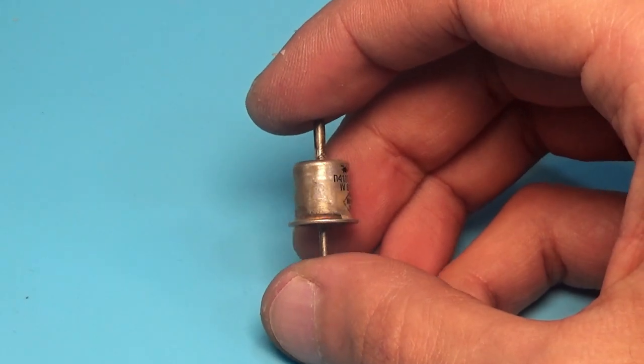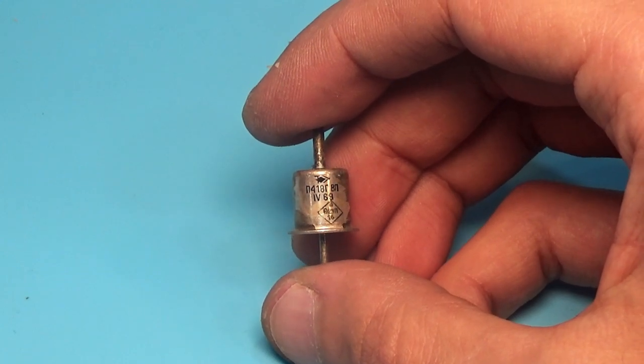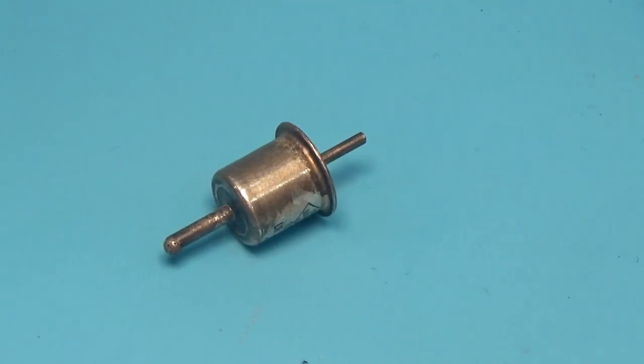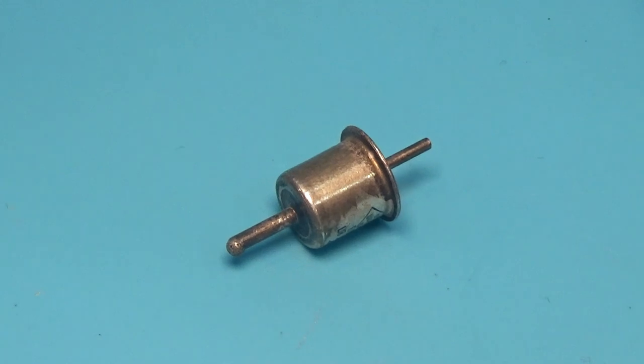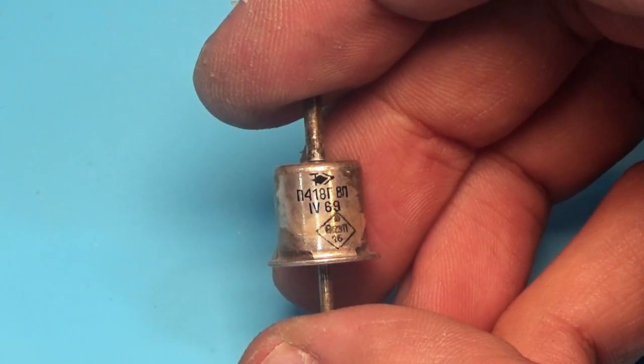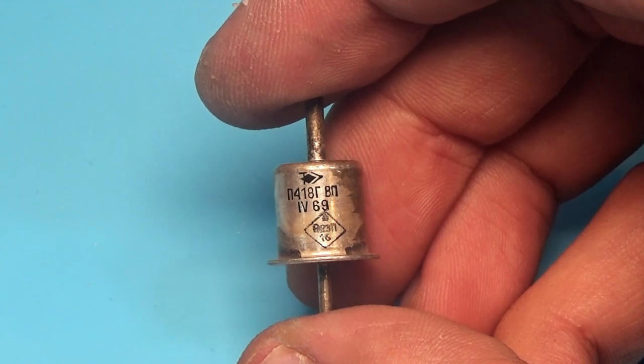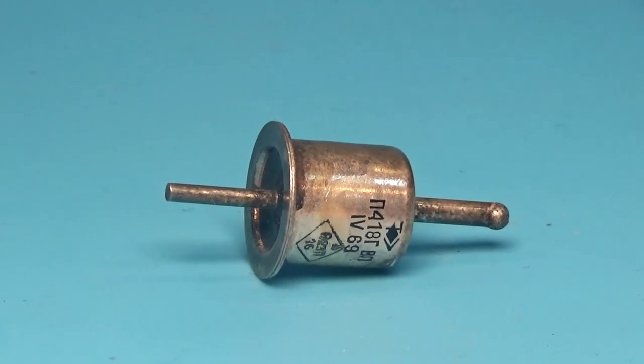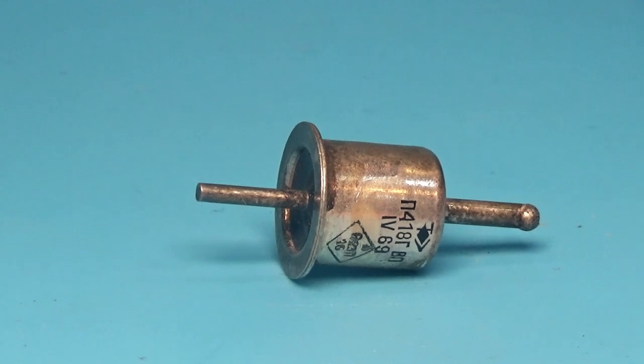And this thing looks like a diode, but in fact it is a transistor P418. Developed in 1957, my sample produced in 1969, and judging by the rhombus and the inscription, it corresponds to the military acceptance.